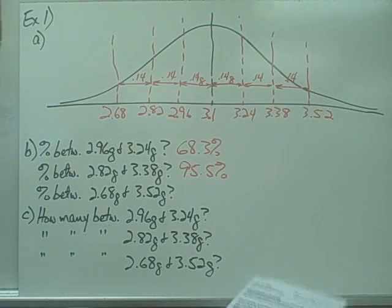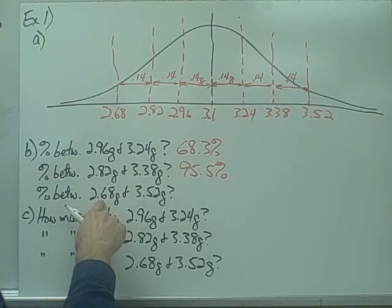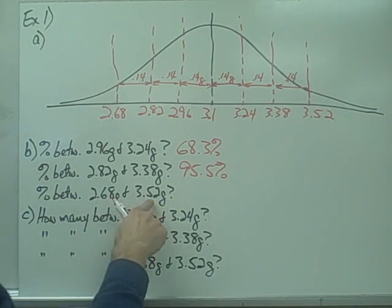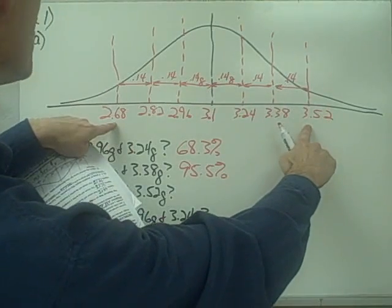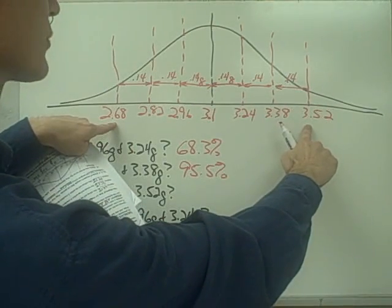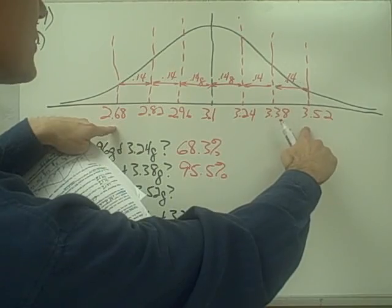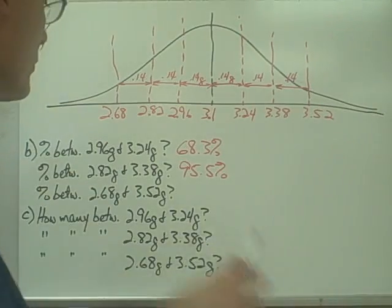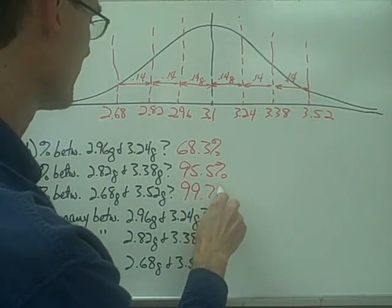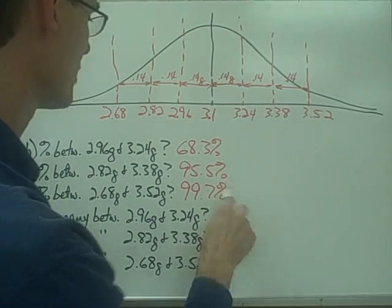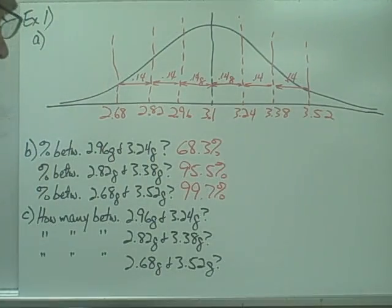What percent of pennies lie between 2.68 grams and 3.52 grams? Those values represent three standard deviations above and below the mean, which means 99.7% of all pennies lie between those two values.